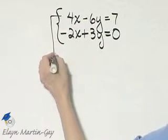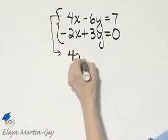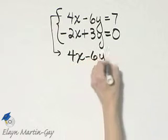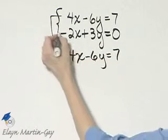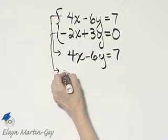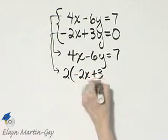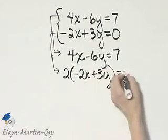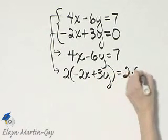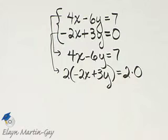Let's rewrite the first equation. 4x minus 6y is 7. The second equation, I'm going to multiply the left side by 2, negative 2x plus 3y. And then a very common error, don't forget to multiply the right side by 2 also.